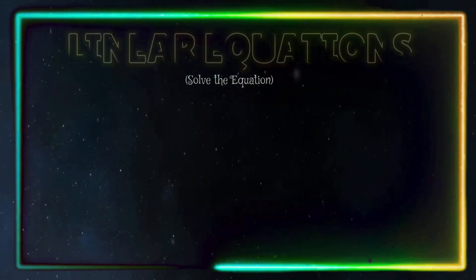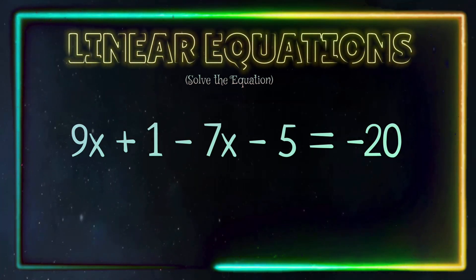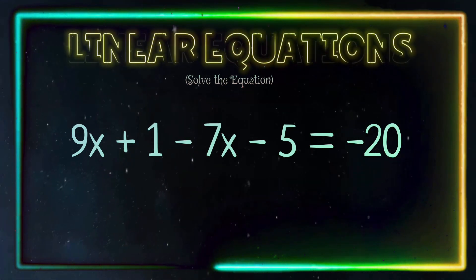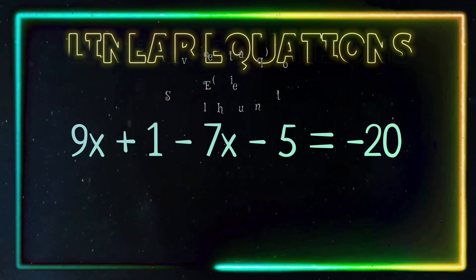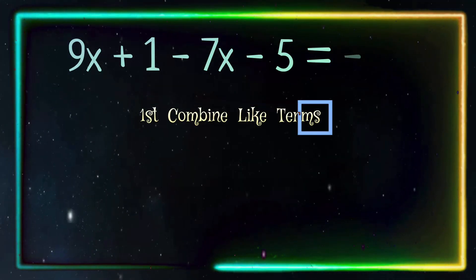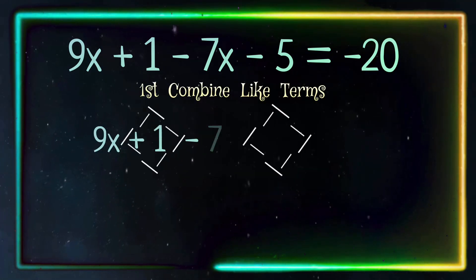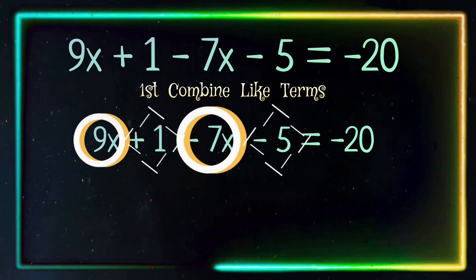Hi, welcome back to our channel Soul Cosmic Learning Station. In this video, we will be solving the linear equation below. Our first step is to combine like terms. For the number terms we have positive 1 and negative 5.